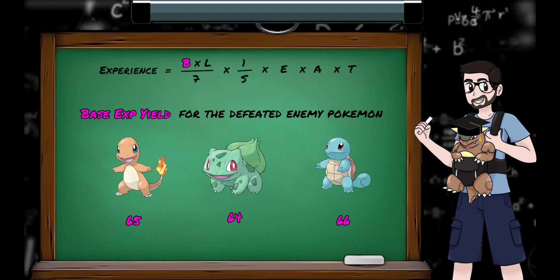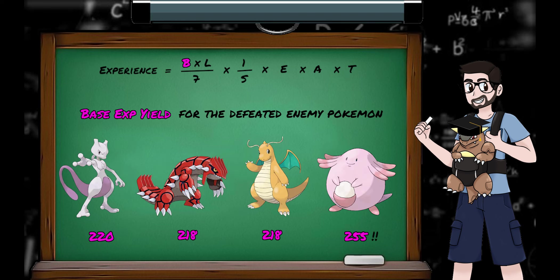So, all Charmanders have the same XP yield, all Bulbasaurs have the same XP yield, which is different to Charmanders. In the first three generations this number is between 20 and 255, depending on the species. XP yield can be translated to the value of the Pokemon, how valuable they are to defeat.